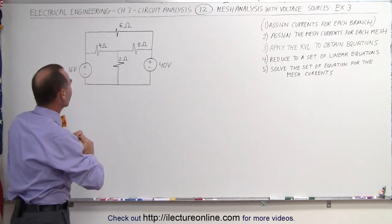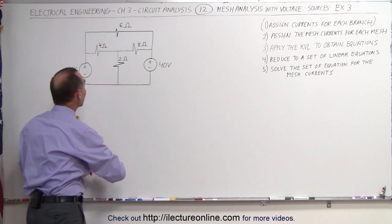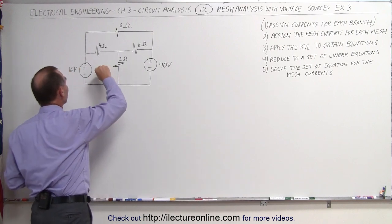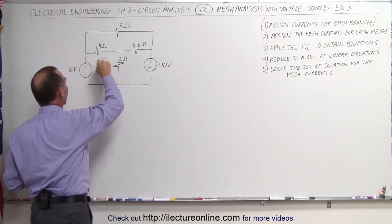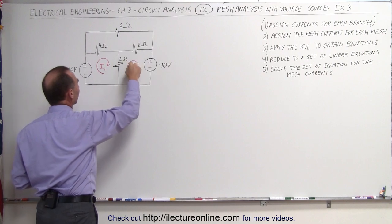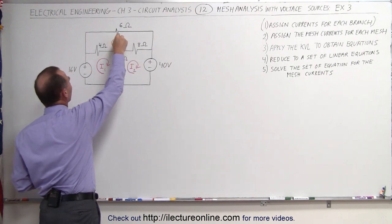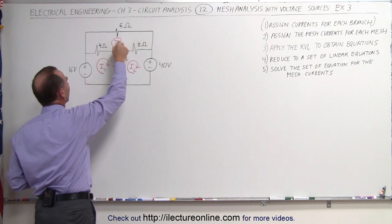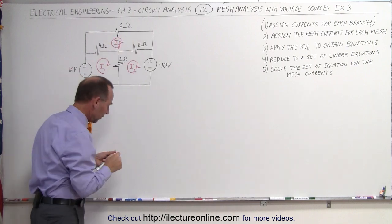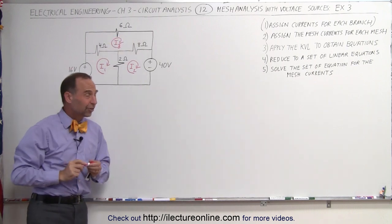We have our first mesh over here — let's call this I1. Here we have our second one — let's call this I2. And there's our third one — let's call this I3. So that makes it a little bit easier by just skipping the first step.